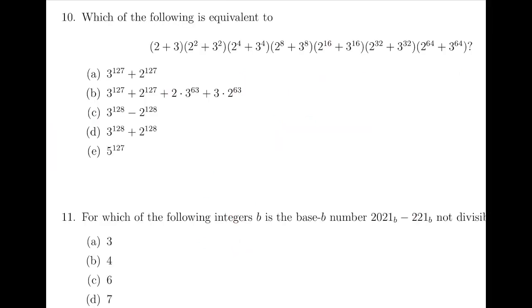Question 10. Imagine that if we multiply this expression by 3 minus 2, then the first part, we'll have 3 squared minus 2 squared. And if we multiply this difference of squares by 3 squared plus 2 squared, we'll get 3 to the 4 minus 2 to the 4, and we can carry on to get 3 to the 128 minus 2 to the 128. Now the final answer is this expression divided by 3 minus 2, which is just 1. So the answer is exactly C.